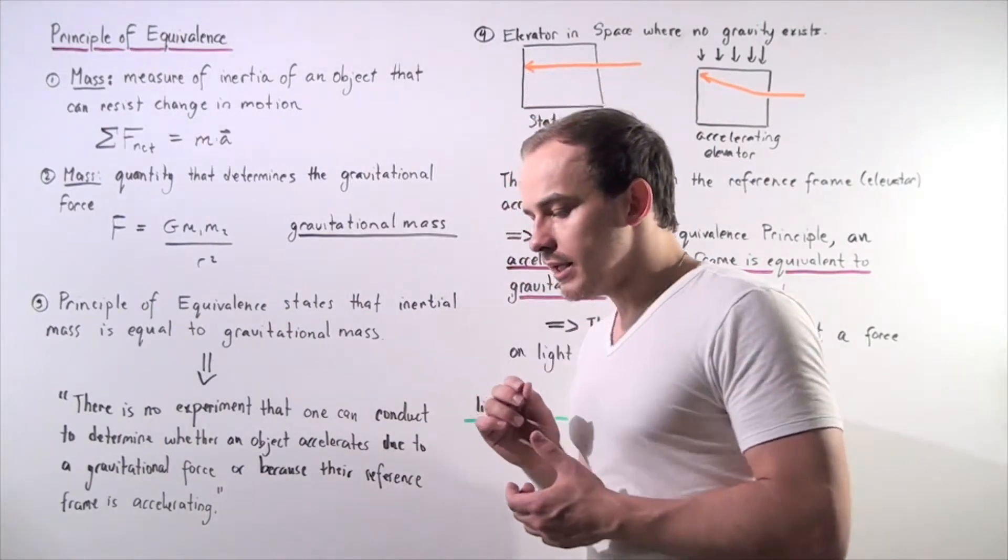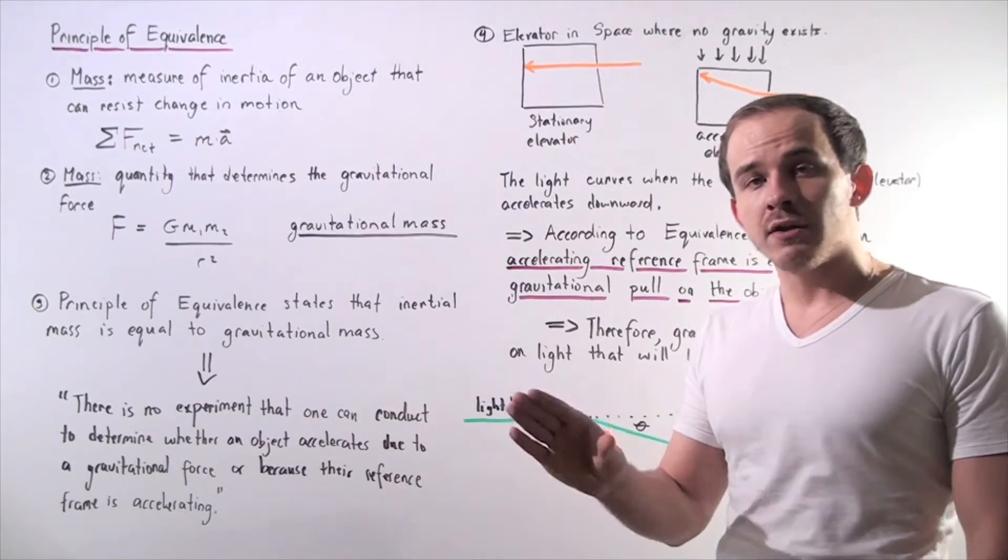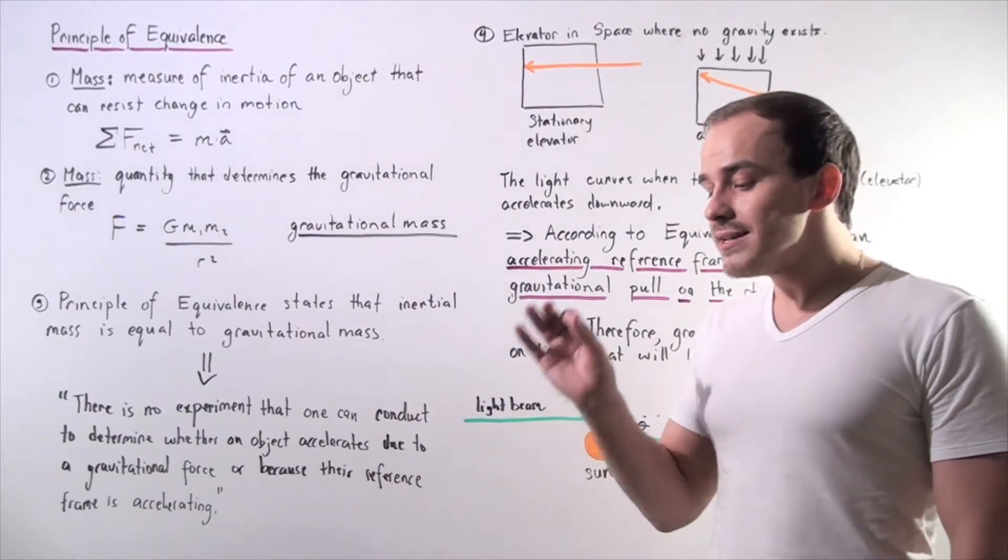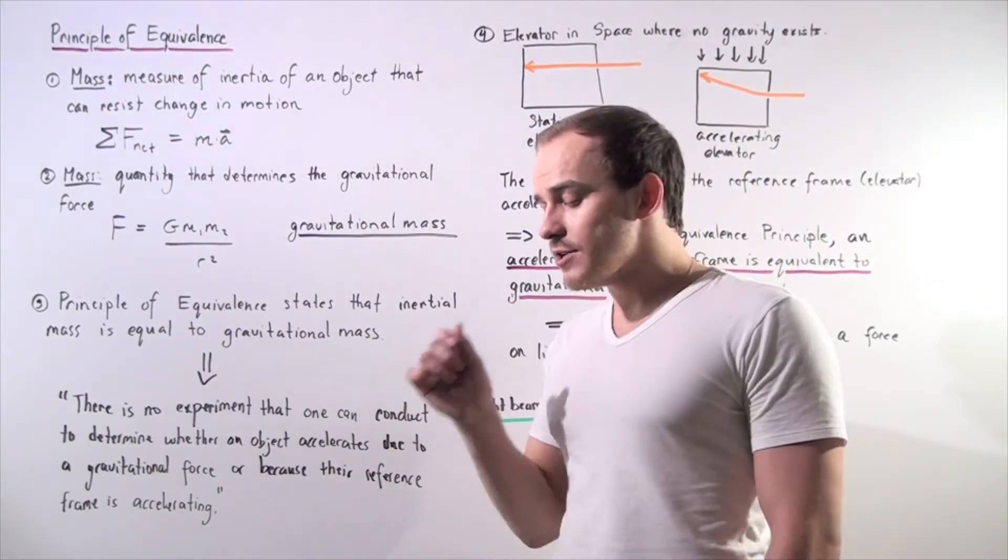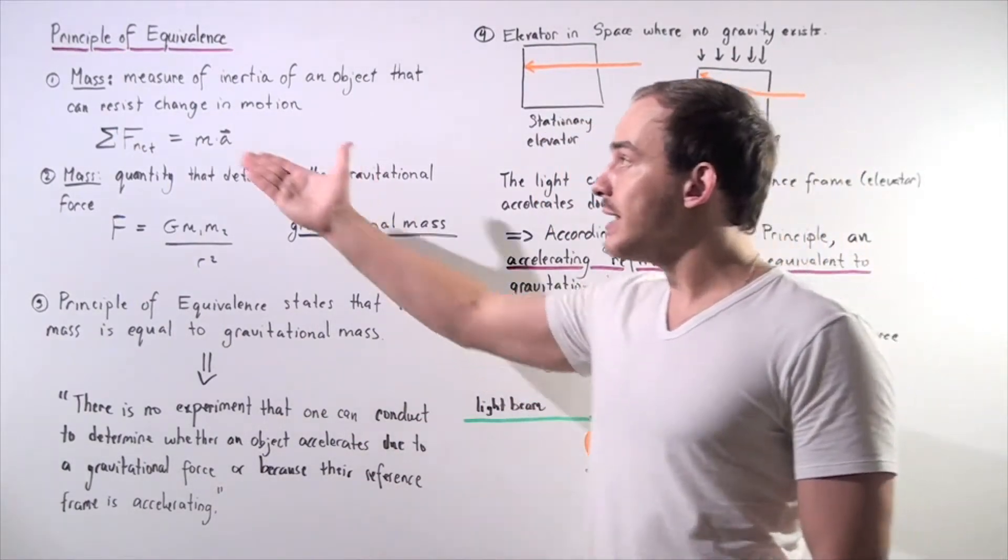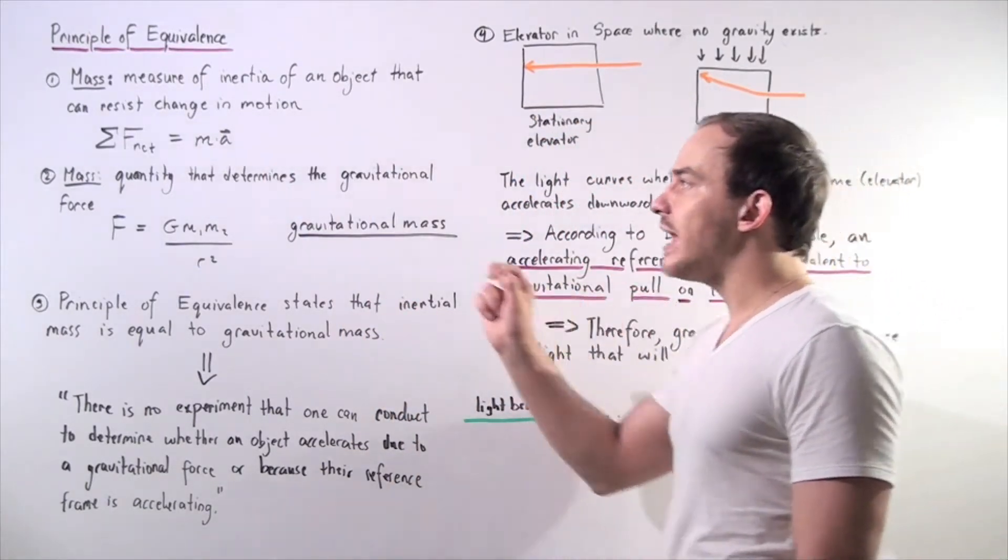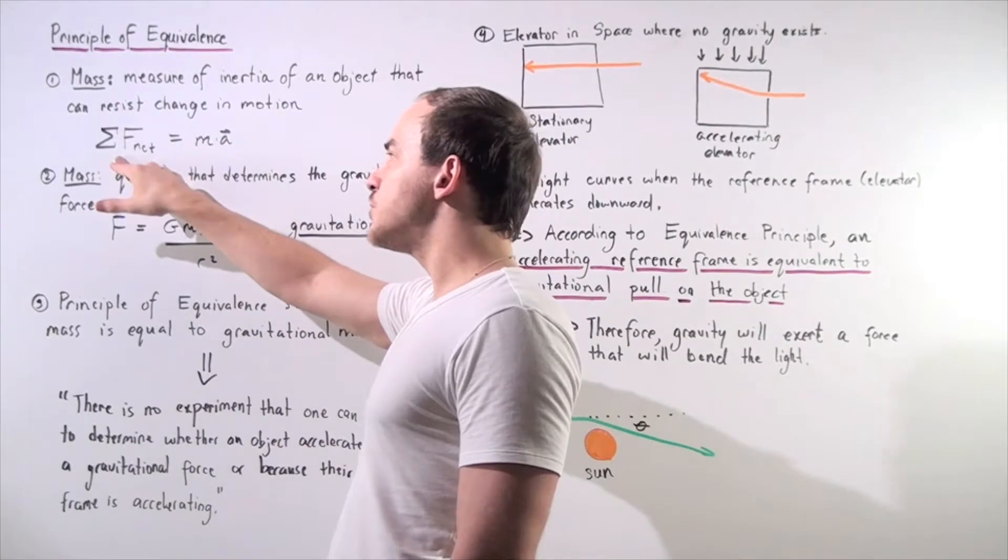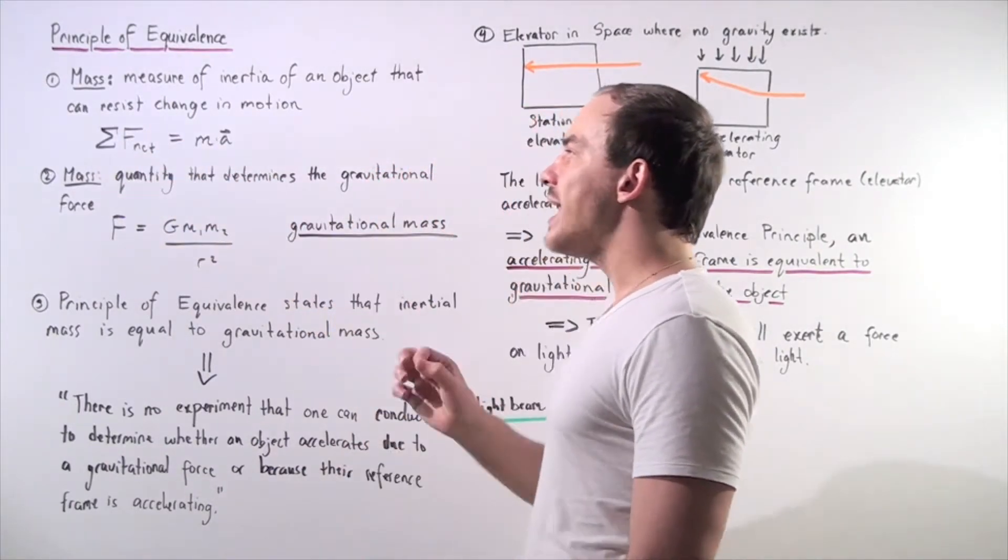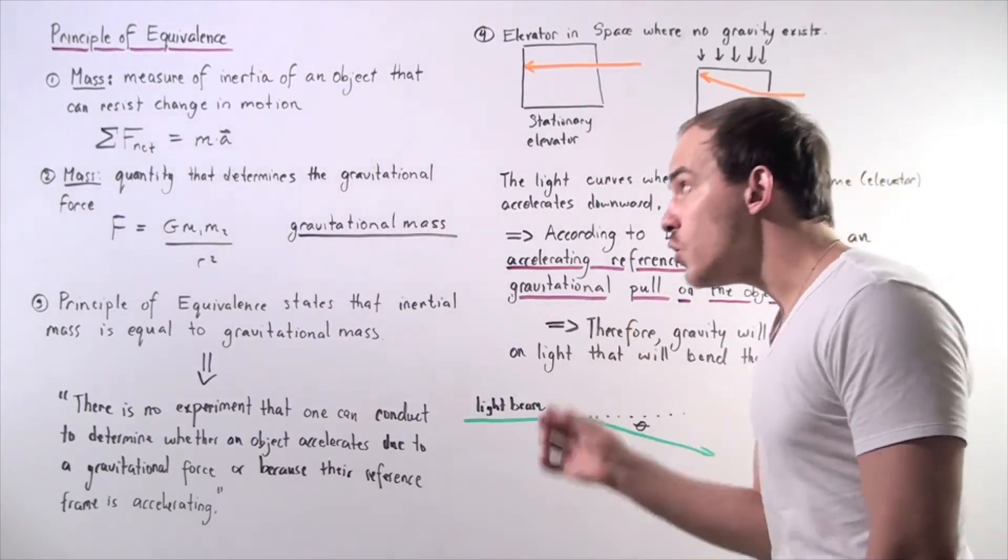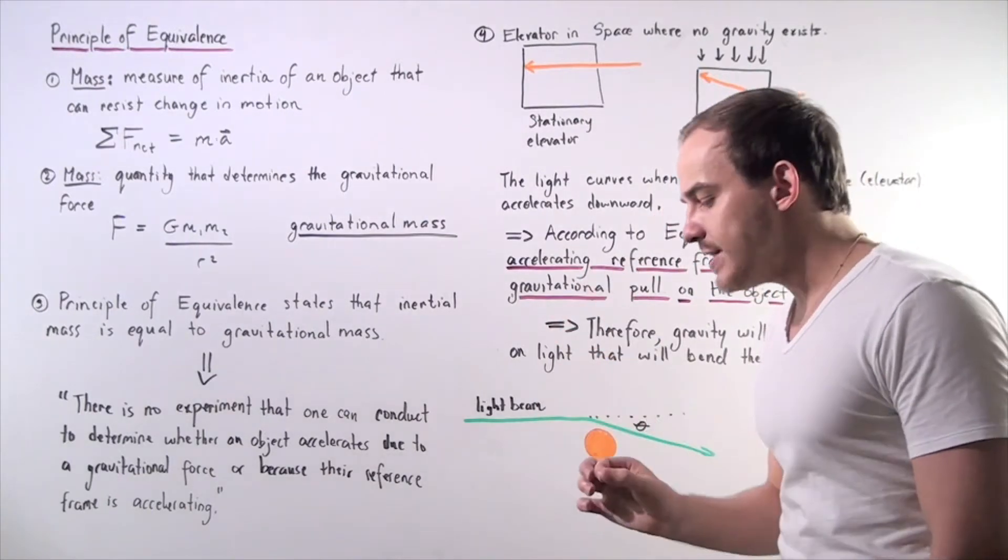Mass is basically a measure of inertia found in an object that is able to resist change in motion, and it's given by our second law of motion. So whenever we have a net force acting on an object with some mass m, that object will begin to accelerate, its motion will begin to change.